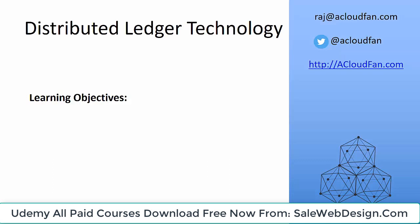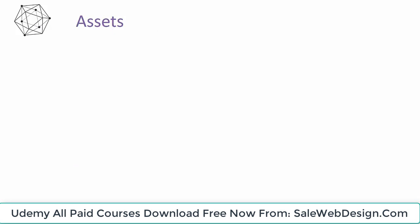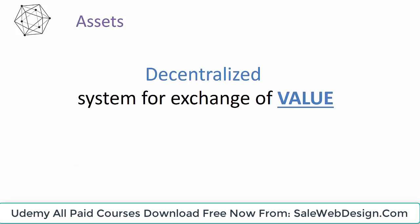Distributed Ledger Technology. In this lecture, I'll explain by way of an example what is distributed ledger technology, and I'll also touch on the typical challenges associated with it. At a high level, think of Hyperledger Fabric as a platform that enables businesses to create decentralized systems for exchange of value. If I ask you which industry involves exchange of value, the answer is all of them — all businesses are involved in exchange of some form of value. For example, the retail industry is about exchanging goods for cash, and the financial industry deals with exchange of stocks and bonds.